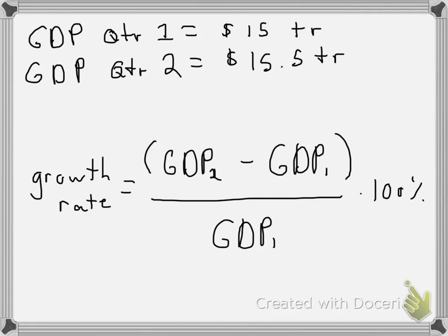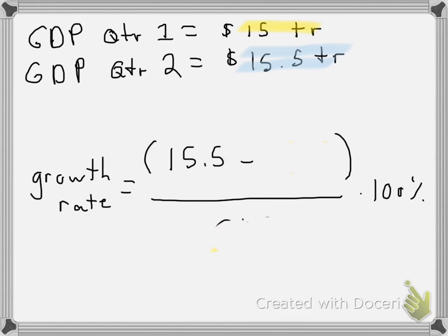So what we need to do is sub in these things. Let's first sub in our GDP 2, our period 2, and we can find that going up to quarter 2. If we were to sub that in we would have $15.5 trillion. Next thing we need to do is sub in GDP in period 1 and this would be our $15 trillion.